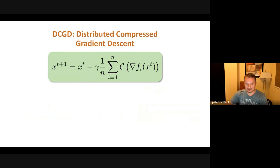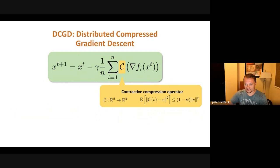The method we are interested in doesn't really perform local steps — we simplify to just one local step. We apply compression operator C to these local gradients. This is an arbitrary contractive compression operator. Examples include top-K, scaled random-K, low-rank approximation, and so on. This is a very general class of compression operators which are not necessarily unbiased. Low-rank approximation and top-K are not unbiased compressors, but they are very powerful in practice.